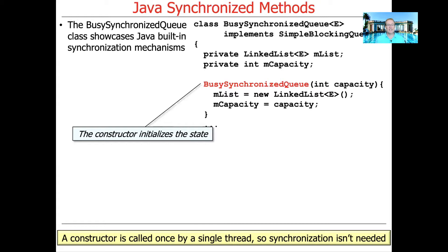The only reason you would ever synchronize anything in a constructor is if the constructor itself is accessing shared mutable state that other threads could be accessing at the same time. Typically, other threads cannot access the state in this object because it's in the process of being constructed. But if you had, for example, an access to a singleton variable within a constructor, that would need to be synchronized if multiple threads could be calling constructors simultaneously. All this constructor does is make a new linked list, assign it to the mList field, and assign the capacity to the mCapacity field.